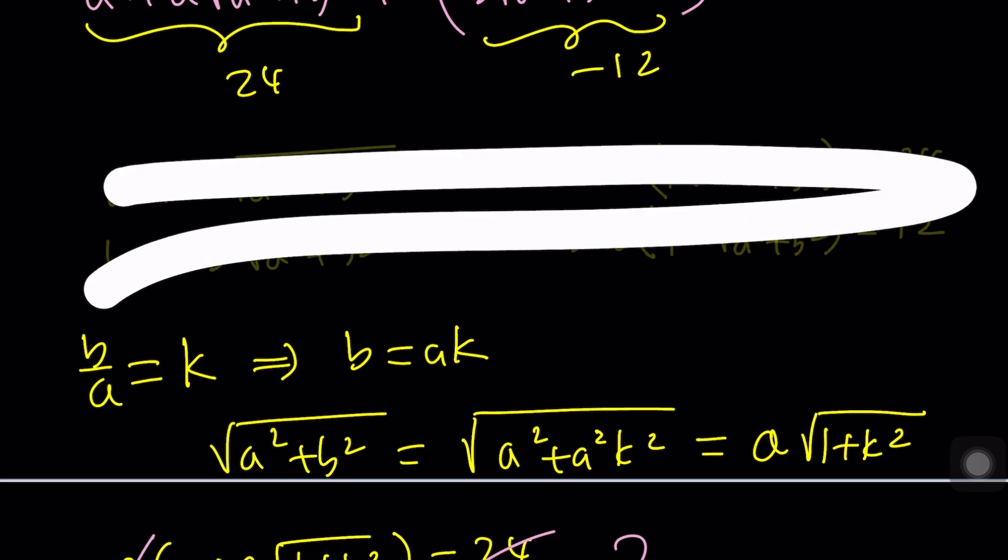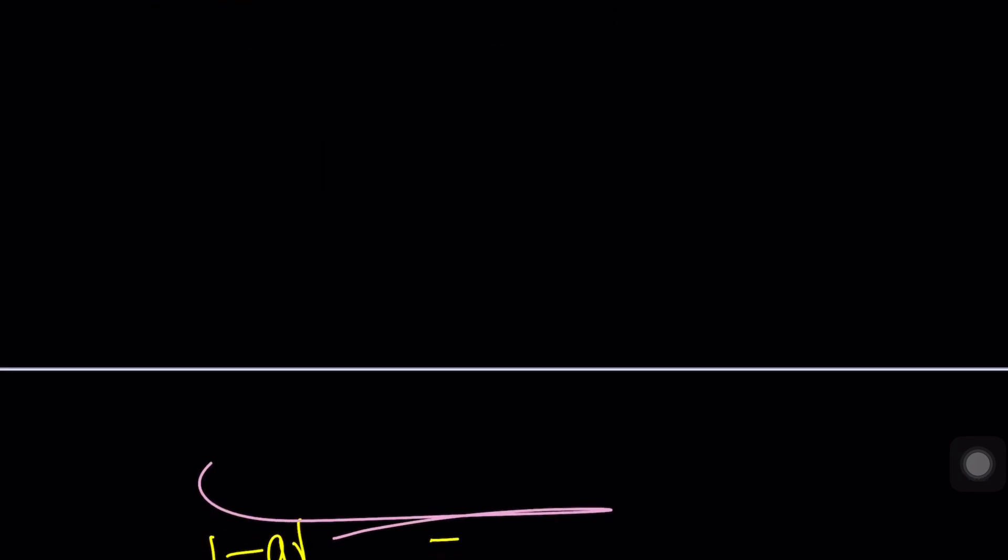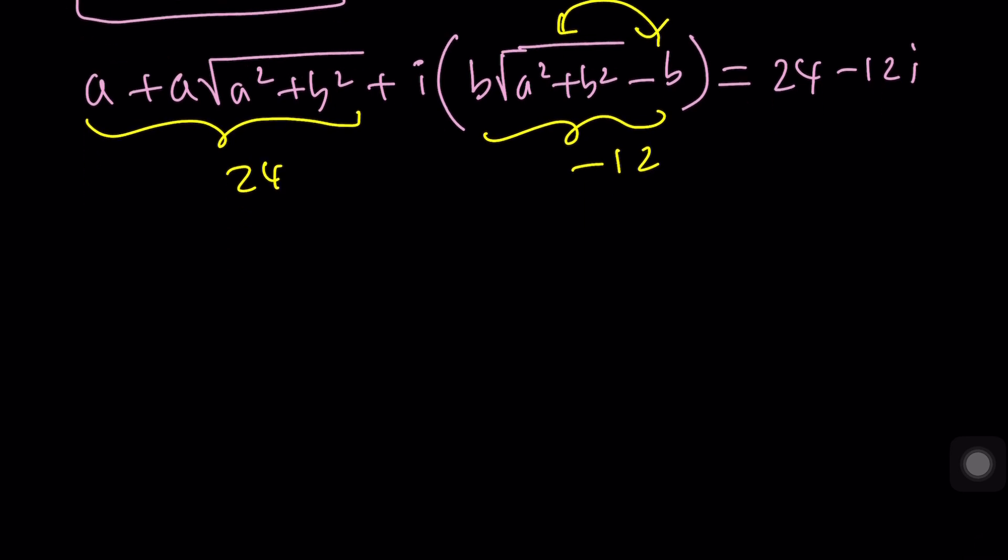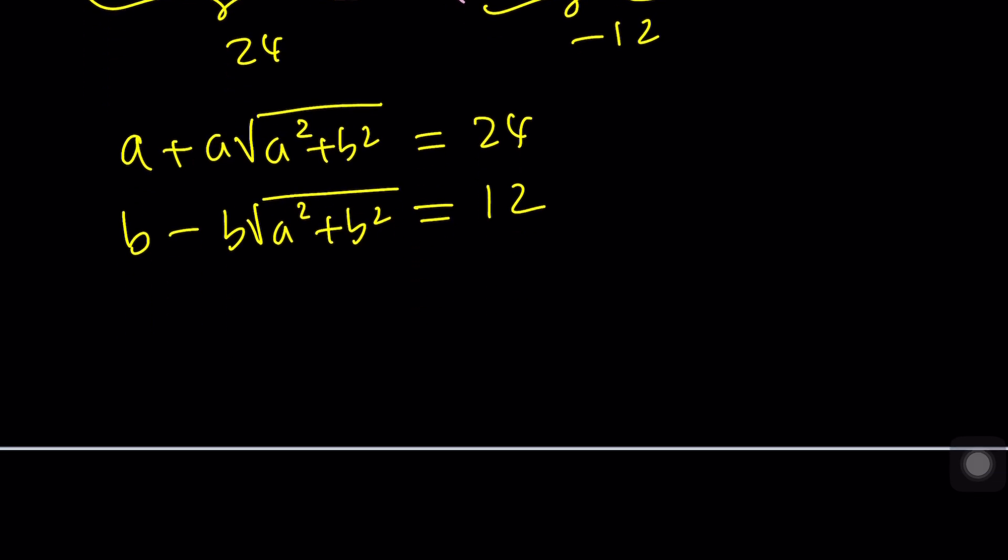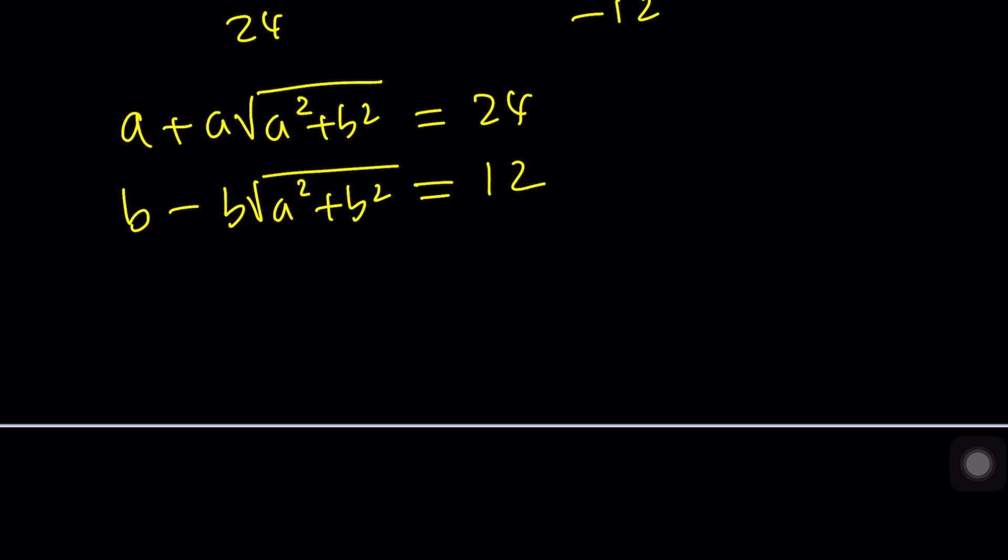So we're kind of learning as we go. And you kind of see my thought process too, right? So I don't think we can manipulate that way. Why don't we just try to get rid of the radical? One thing we can do is isolating the radical. This expression is common. So from the first equation, I can get this equals 24 minus a, and then divide both sides by a. And from the second equation, we're going to get b times this equals b minus 12 divided by b.